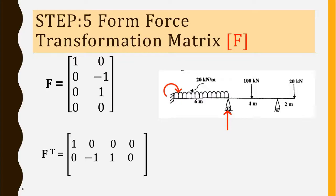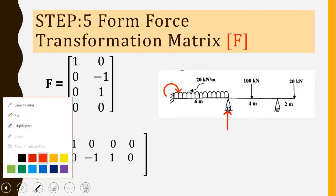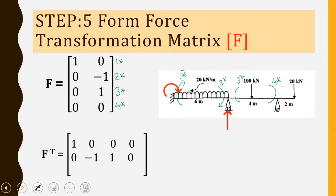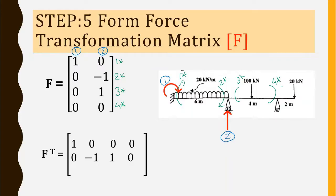Moving to the next step: development of the force transformation matrix. We identify element coordinates one-star, two-star, three-star, and four-star, along with the two system coordinates. When applying the first system coordinate alone — which is a moment — the force developed at one-star is 1, and all other element coordinates are zero.